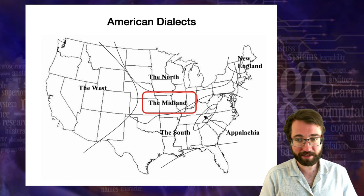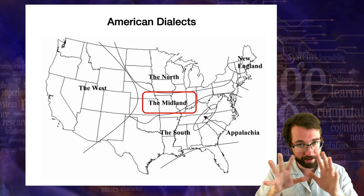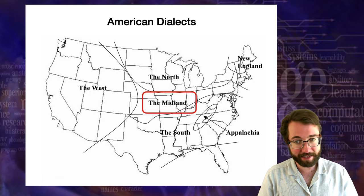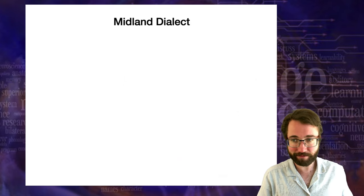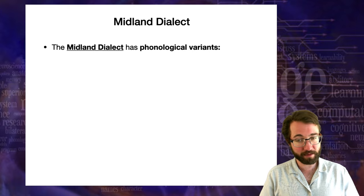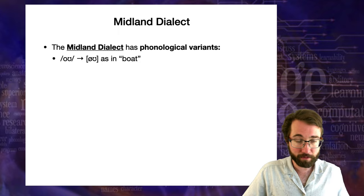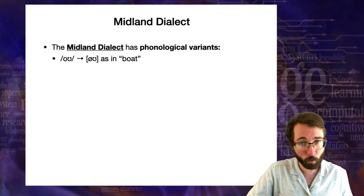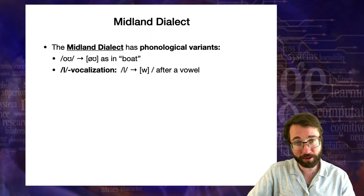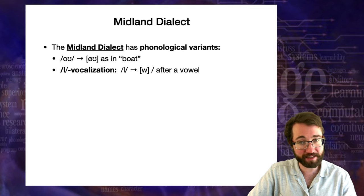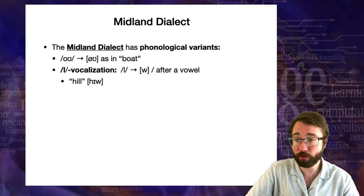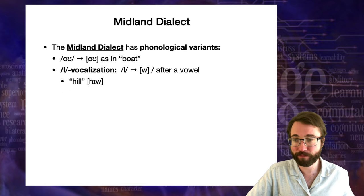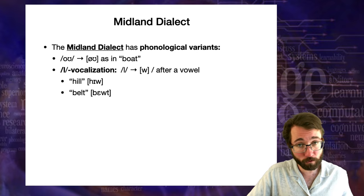Now I'll turn to the Midland — the interesting area in the middle latitudes of the United States encompassing areas of Indiana, Ohio, Pennsylvania, and Missouri. The Midland dialect is characterized by phonological variants like the following: the phoneme /oʊ/ is expressed as the sound /oː/, so 'boat' would be pronounced 'bote.' There is also a phenomenon called L vocalization, where the phoneme /l/ is expressed as the sound /w/ when it appears after a vowel — so 'hill' comes out as 'hiw' and 'belt' comes out as 'bewt' in this dialect.